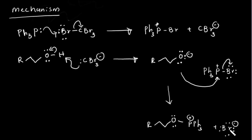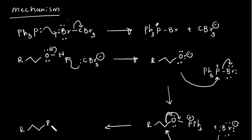This bromide minus can now attack this carbon and remove the phosphine oxide. The bromide attacks, the phosphine oxide leaves, and we have our halide — this is the final product. We also have triphenylphosphine oxide as a white precipitate, which we can remove during workup to easily isolate the halide.